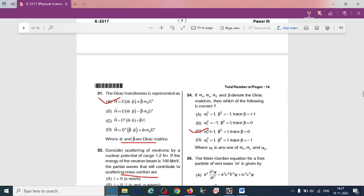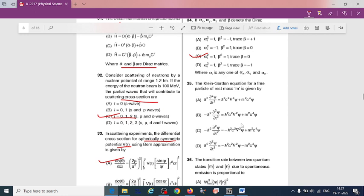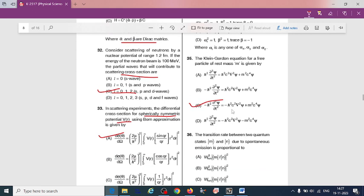Next question: The Klein-Gordon equation for free particle of rest mass m is given by... This is also a direct question. The answer for this, if we observe carefully the four options, option C is correct: -ℏ²∂²ψ/∂t² = -ℏ²c²∇²ψ + m²c⁴ψ.